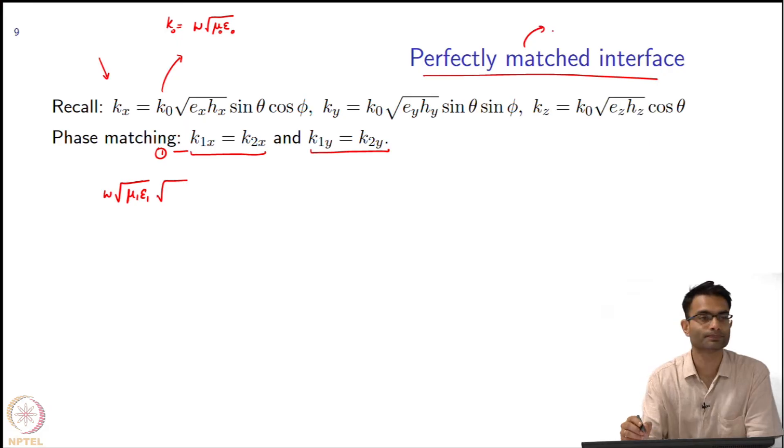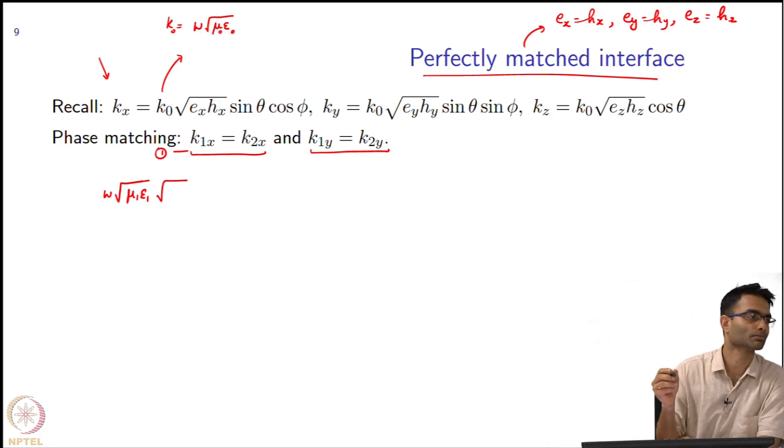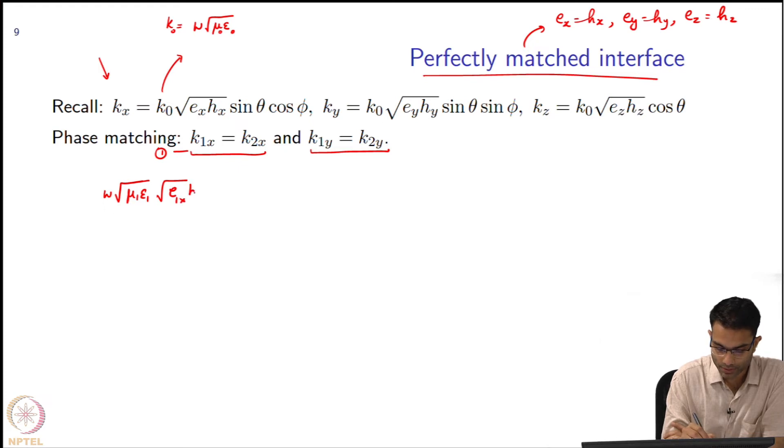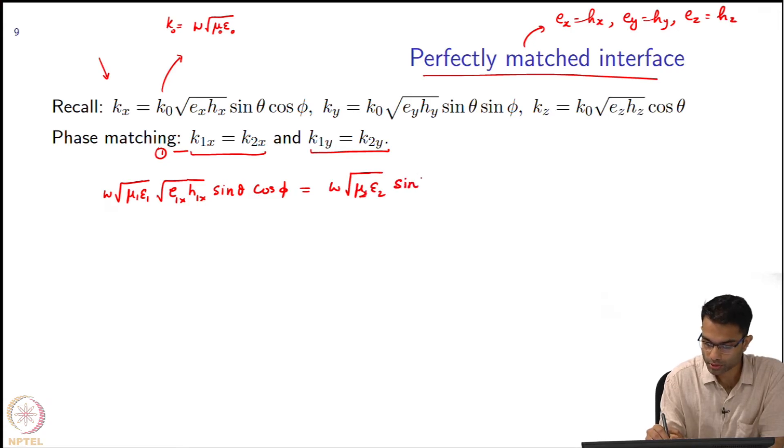We are calling this perfectly matched. Perfect matched means what? We have taken - it is our choice - we take e_x is equal to h_x, e_y is equal to h_y, and e_z is equal to h_z. Reduce the number of free variables. So this is going to be now e_1x h_1x sin theta cos phi is equal to omega square root mu_2 epsilon_2 sin theta_1 cos phi_1 and sin theta_2 cos phi_2.